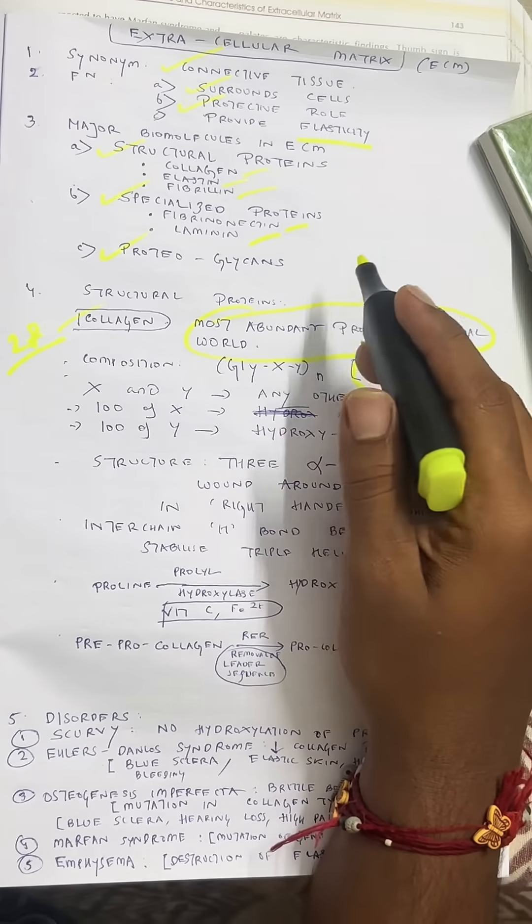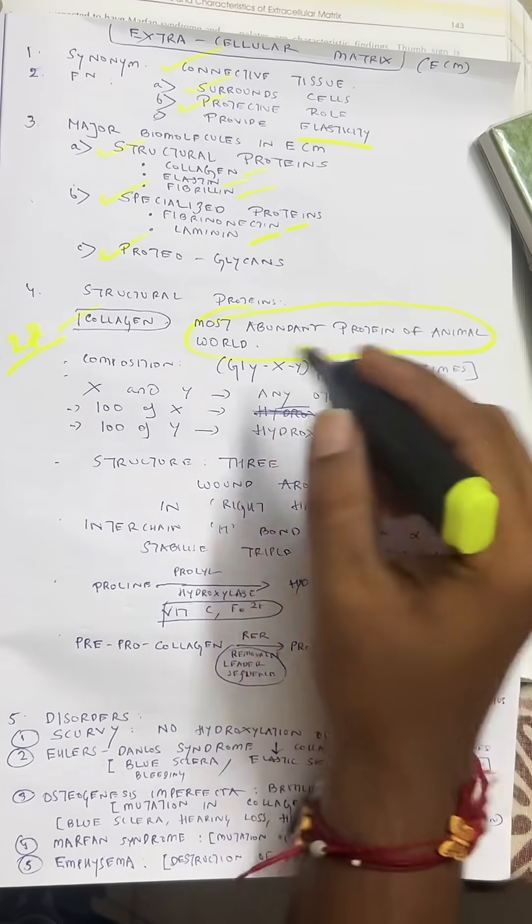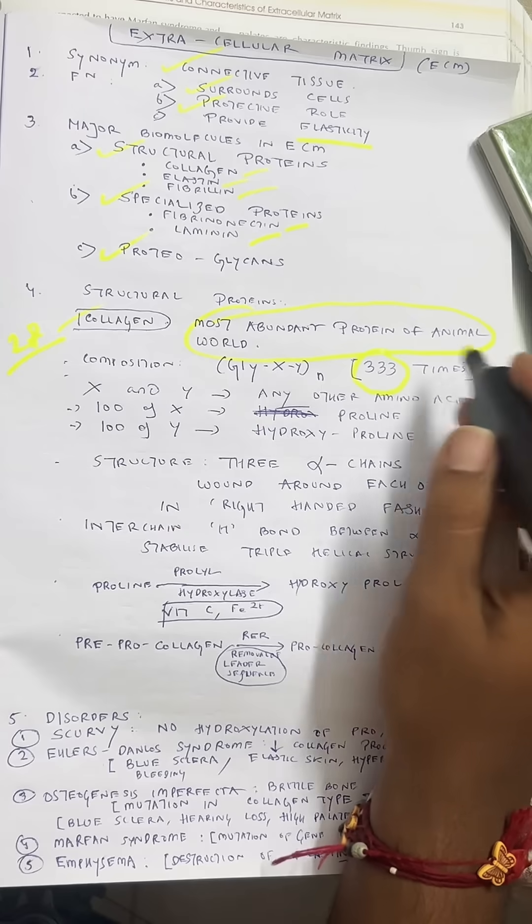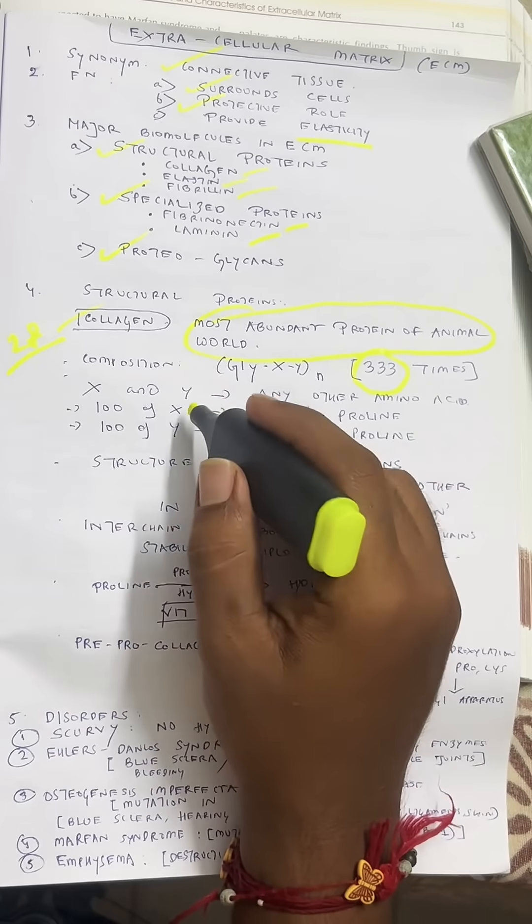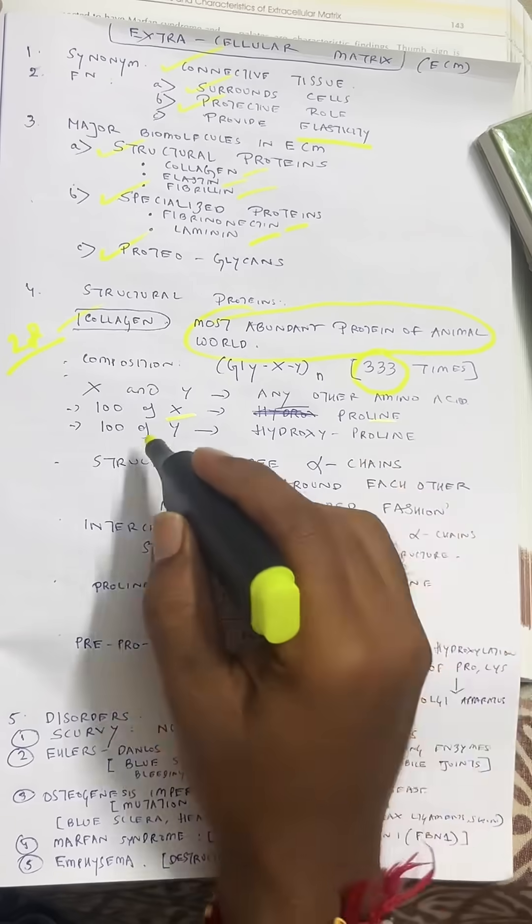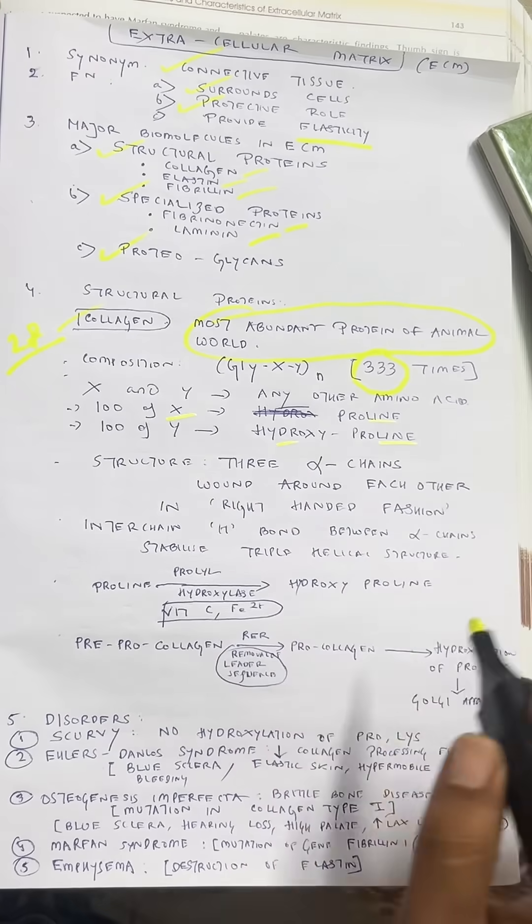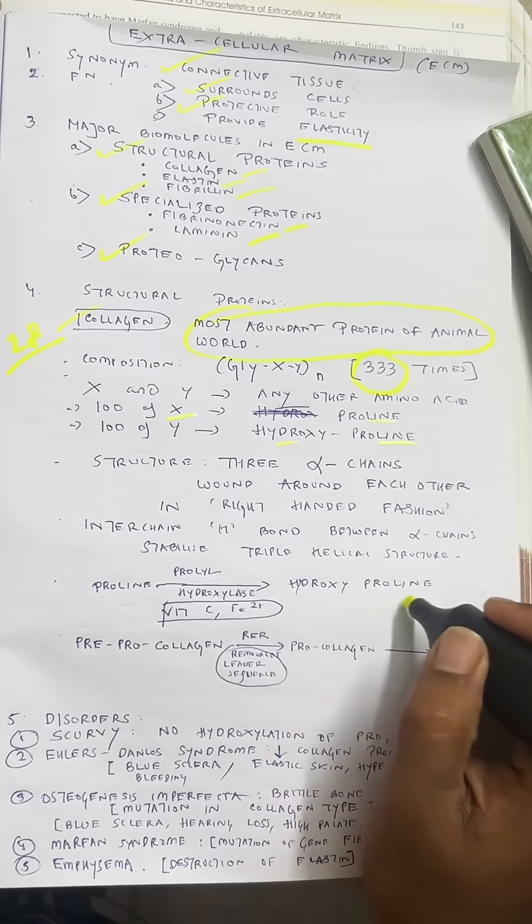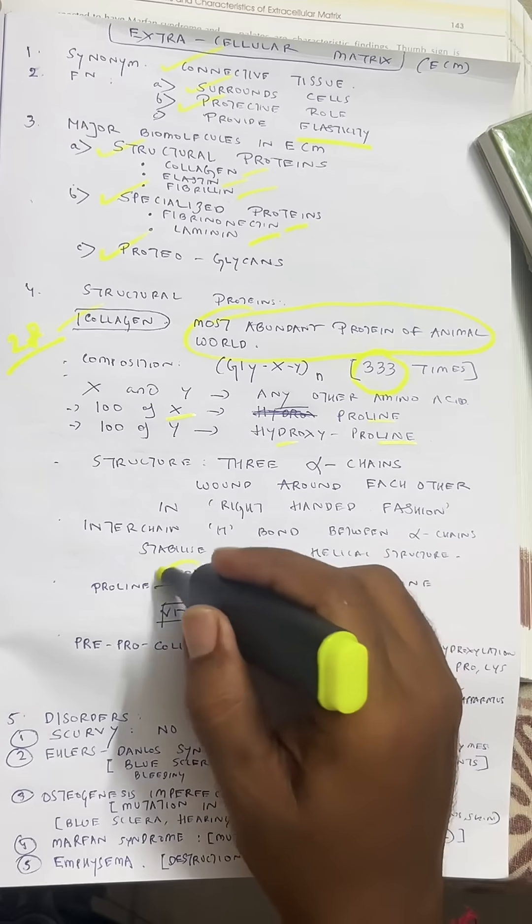Every third amino acid of collagen is glycine. X and Y can be any other amino acids, but 100 residues of X are proline and 100 residues of Y are hydroxyproline. Proline to hydroxyproline reaction requires prolyl hydroxylase, which requires vitamin C and ferrous ion Fe2+.